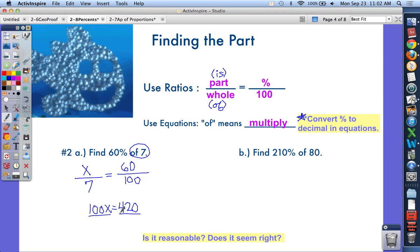Divide by 100 on both sides, and X equals, please don't pull your calculator out for this, 4.2. That's one way you can set up the problem. A proportion: part over whole equals percent over 100.